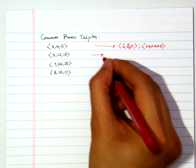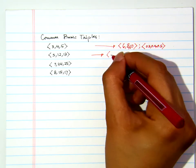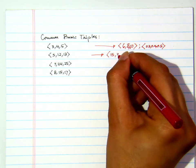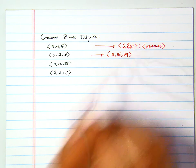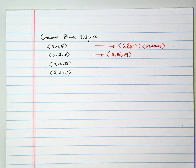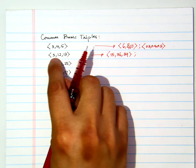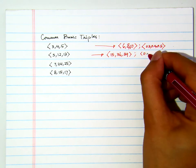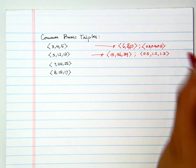Like this one here. Suppose we want to multiply by three. Then, 15, 36, and then 39 is also a triple. Or, if you want, you divide this thing here by ten. That will be 0.5, 1.2, and 1.3 is also a triple.